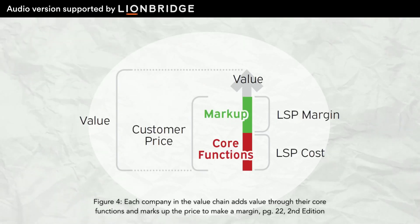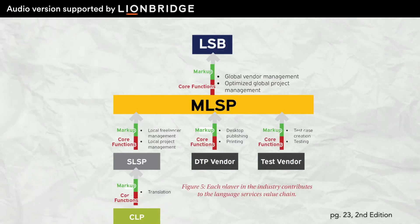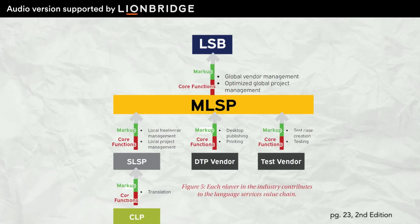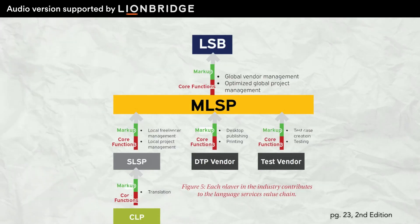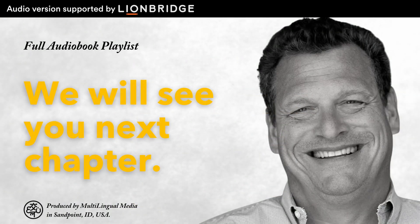Figure 5: Each player in the industry contributes to the Language Services value chain. Figure 5 takes Figure 4 and expands it into a multi-layered diagram. This shows Language Services buyers at the top, with contracted language professionals, such as translators, at the bottom. At each layer through the value chain, as we move up, each layer adds value through their core functions. This value is then supplemented by the amount they choose to mark up. The total between the value added by the core functions and the value added by the markup equals the cost the next layer up is willing to incur for those services. Figure 5 is an excellent illustration of why multiple language services providers are able to charge more for the same translation than an individual contracted language professional, such as a translator.